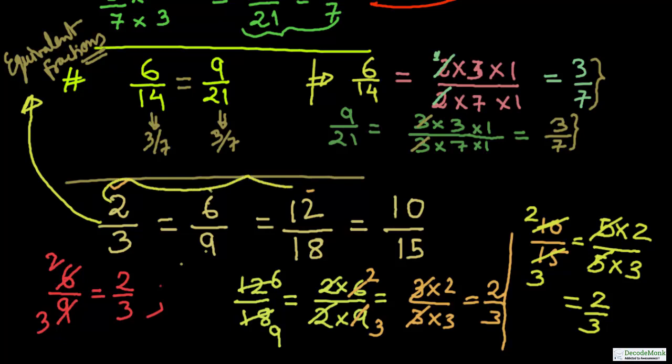2 by 3, 6 upon 9, 12 upon 18, 10 by 15 — all these are equal; these are equivalent fractions. You need to keep practicing and be really fast at cancelling out common factors to prepare well for your Olympiad and your mathematical journey.